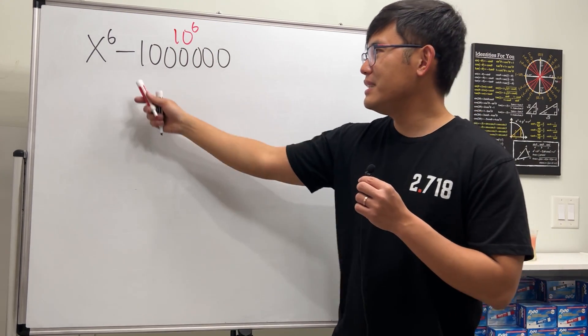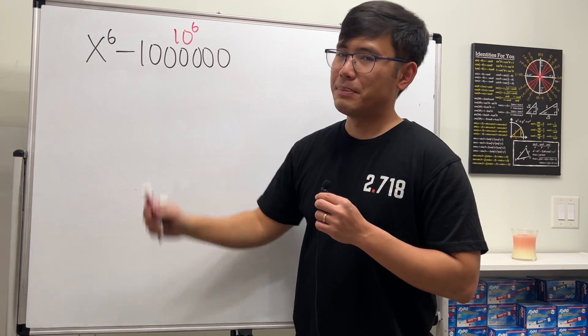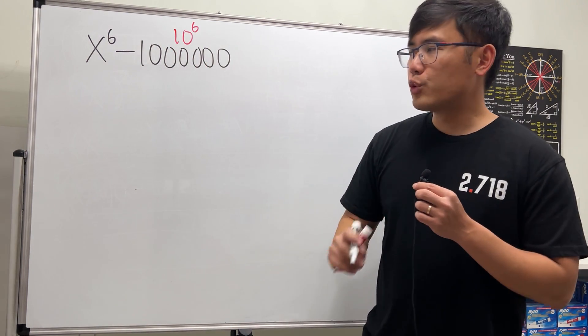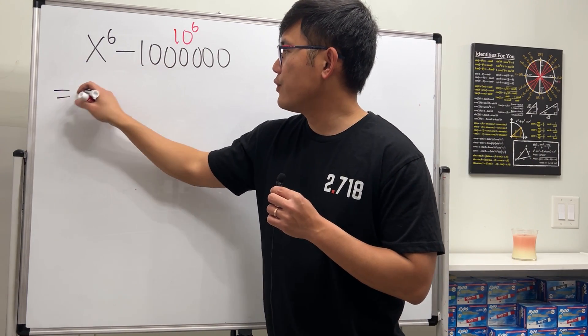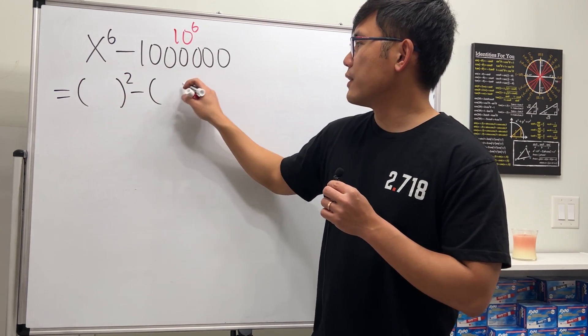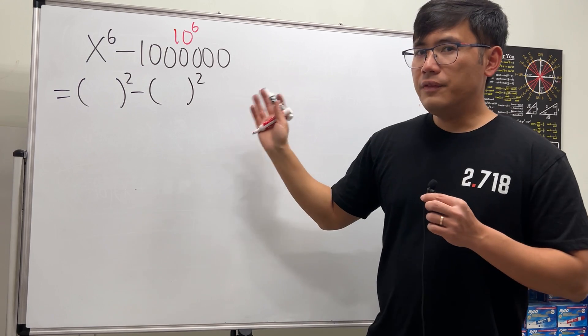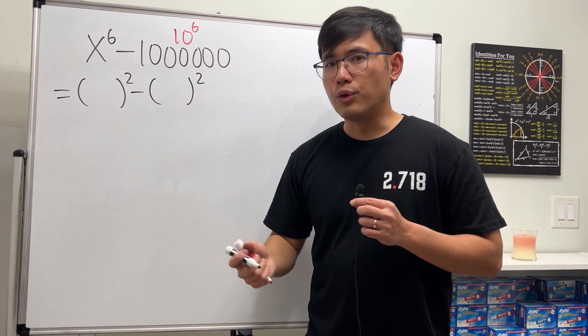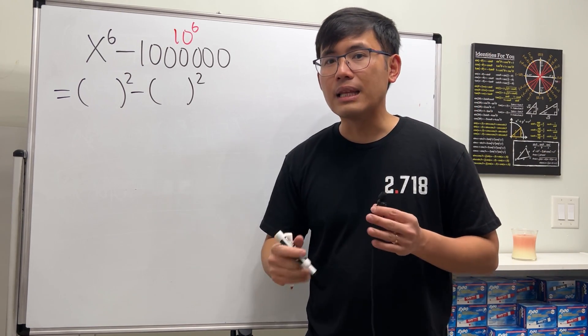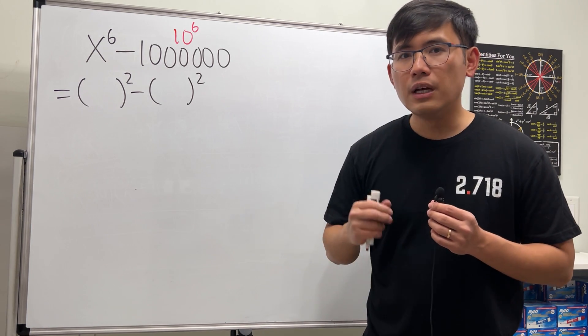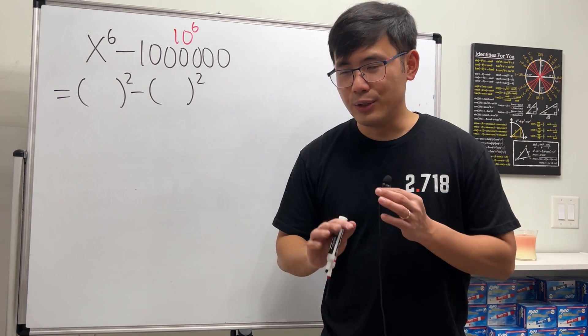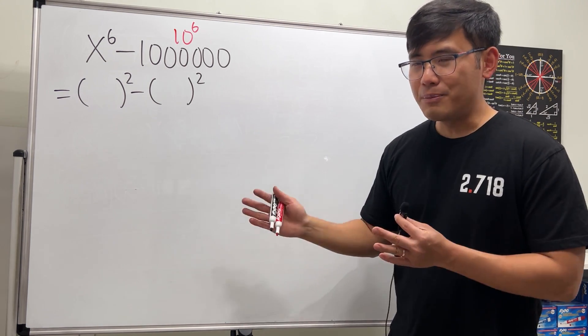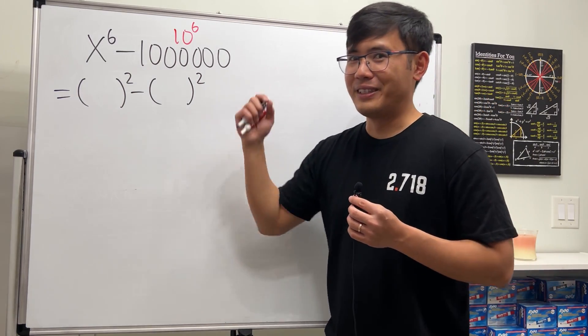So we are actually seeing how to factor a difference of two 6th powers. And to do so, I will recommend you guys to look at this as a difference of two squares first. Even though we can look at this as a difference of two cubes first, let's not do that because that will actually cause us some trouble. I will have a different video for you guys to explain that situation. But for now, please just trust me that this right here is easier.